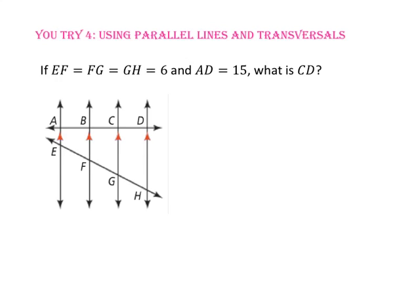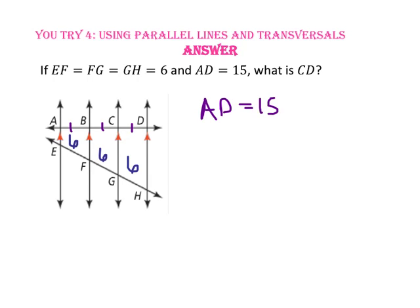Pause the video and do You Try number 4. If the lengths of segments EF, FG, and GH are all equal to 6 and the length of segment AD is 15, what is the length of segment CD? Since EF, FG, and GH are all congruent, segments AB, BC, and CD are all congruent as well. Since the length of AD equals 15 and it takes three congruent segments to create AD, the length of segment CD will be one third of 15, or 15 ÷ 3, which equals 5.